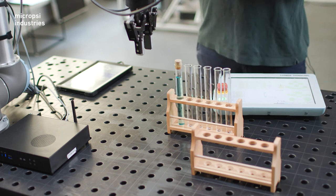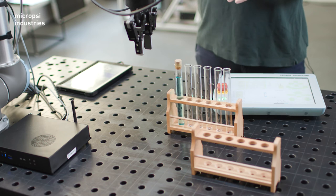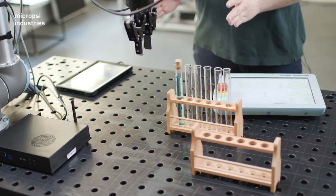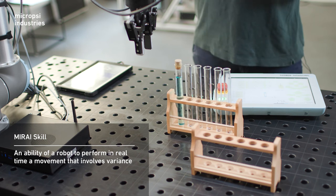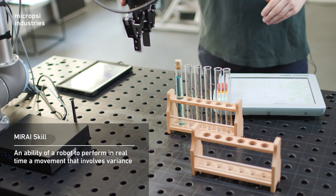For each complex section we want the robot to perform within the broader task, we train a Mirai skill. A Mirai skill is an ability of a robot to perform a movement that involves variance. A Mirai skill is acquired through human demonstrated training.